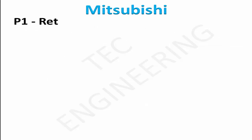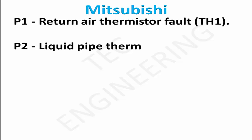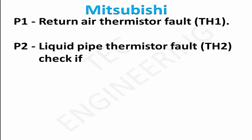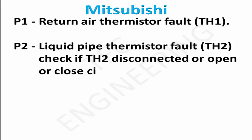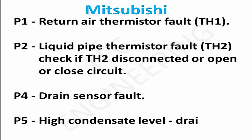P1: return air thermostat TH1 fault. P2: liquid pipe thermostat TH2 — check if TH2 is disconnected, open, or short circuit. P4: drain sensor fault. P5: high condensate level or drain pump failure.